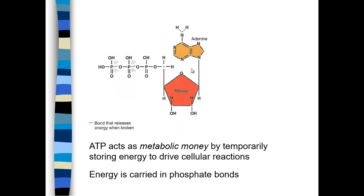ATP is a very special molecule — adenosine triphosphate. It has an adenine group, which is a nitrogenous base; ribose, which is a five-membered sugar; and three phosphate groups. Both terminal phosphate groups are highly reactive, but the most energy is in the final phosphate bond. If we break off that phosphate, ATP is converted to ADP and we get a burst of energy.